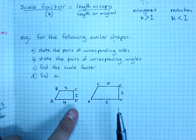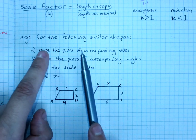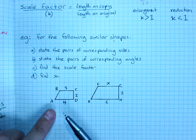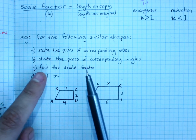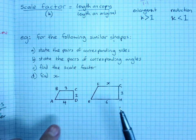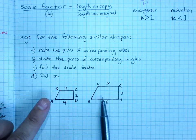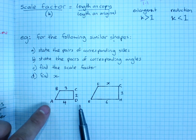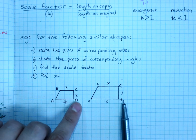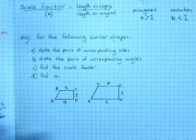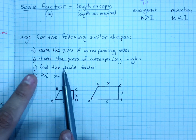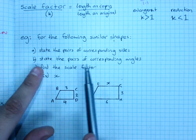So for the following similar shapes, state the pairs of corresponding sides, state the pairs of corresponding angles, find the scale factor and find x. So I'll talk about how. It's worth noting that they haven't done A and A prime, they've done just two different sets of letters. So, we don't actually know if this was the original or this was the original, and I'll tell you how we work that out once we get down to our scale factor.